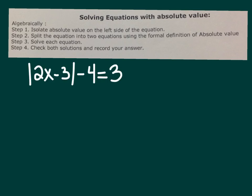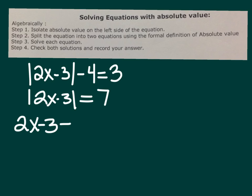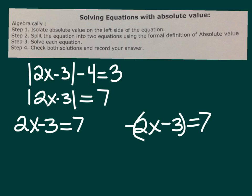Let's start with the absolute value of 2x minus 3, minus 4, equals 3. We're solving for x. First, isolate the absolute value: the absolute value of 2x minus 3 equals 7 (add 4 to both sides). Then split into two equations: the positive version, 2x minus 3 equals 7, and the negative version, negative (2x minus 3) equals 7. Make sure to use parentheses.